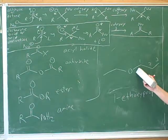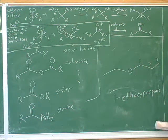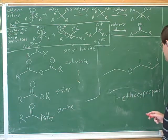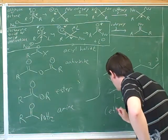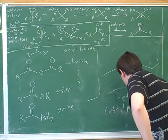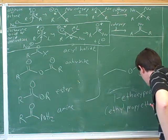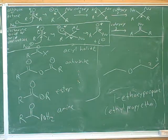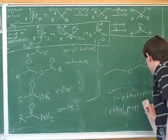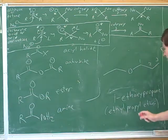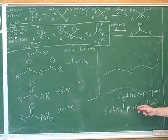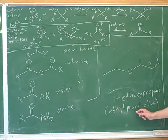You should also know the common name for this. The common name system for naming ethers is very simple — this would be called ethyl propyl ether, written as three separate words. You list them in alphabetical order in the common system. This is similar to the common system for naming ketones. Both naming systems are pretty commonly used.